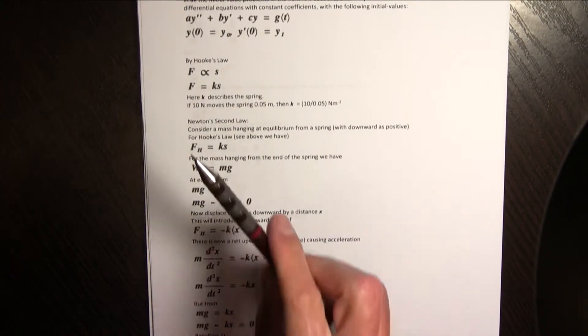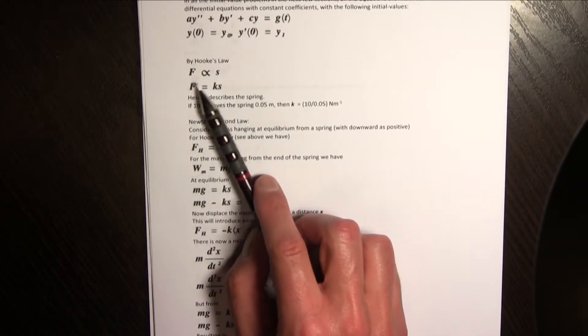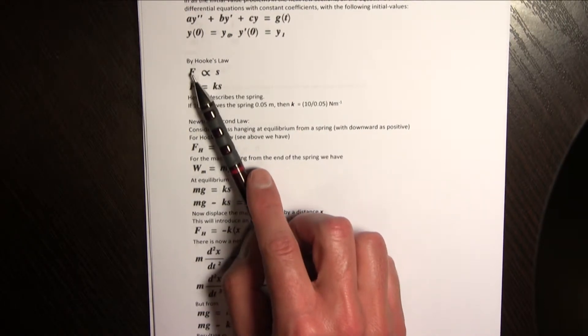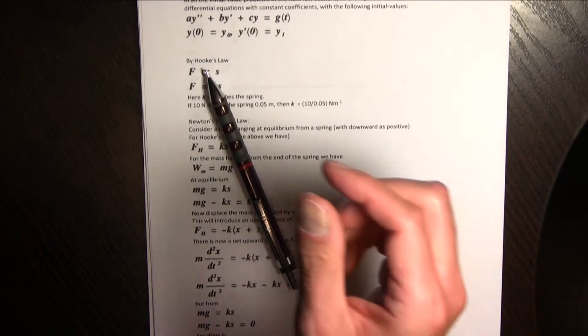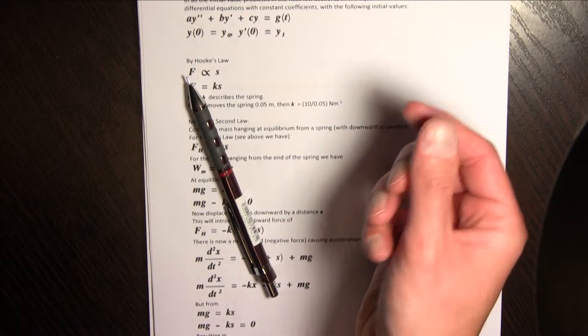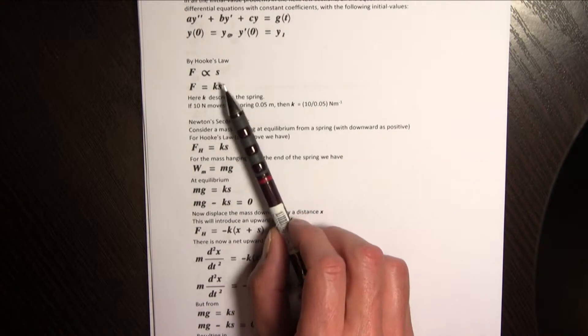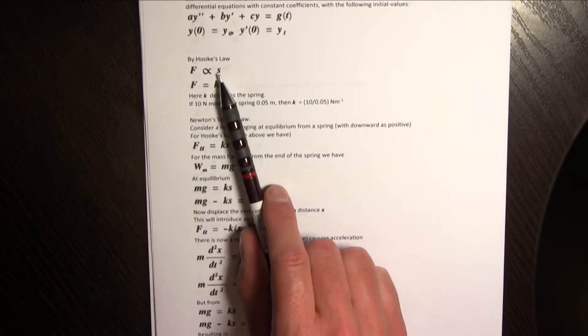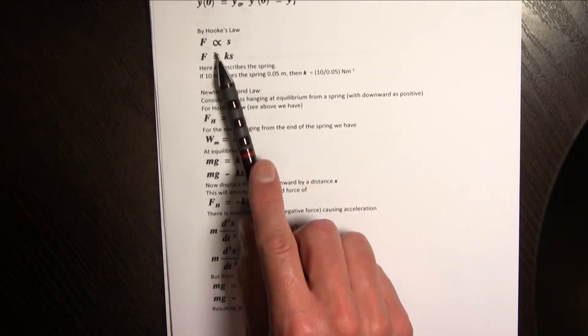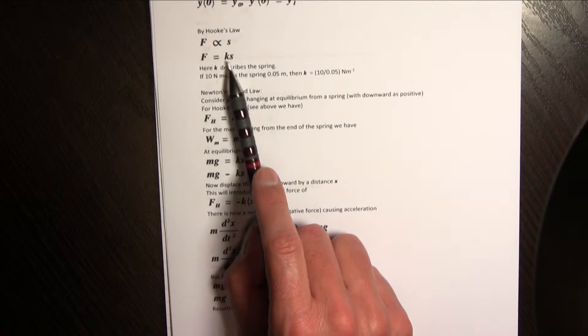So we have to start with Hooke's law and Hooke's law says within the constraints of not overstretching a spring that the restoring force, so if I would pull a spring out it will want to go back, and that is proportional to the distance that I pull it out. I can then therefore introduce a constant of proportionality we will call it k which is the spring constant and that describes the spring completely.